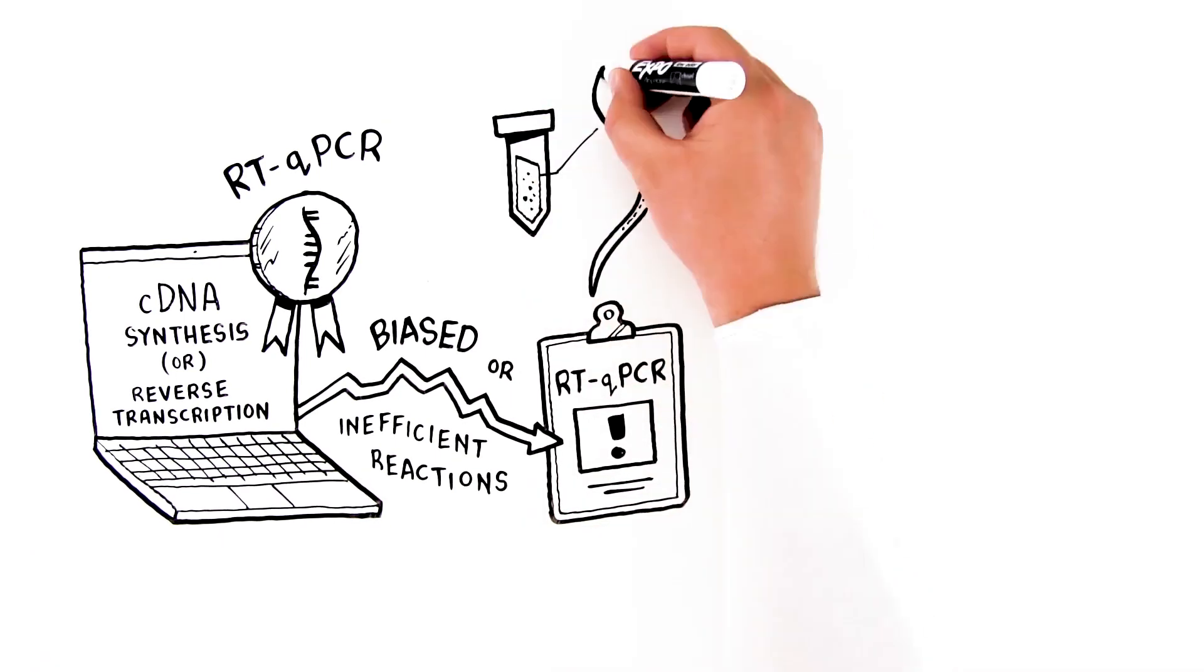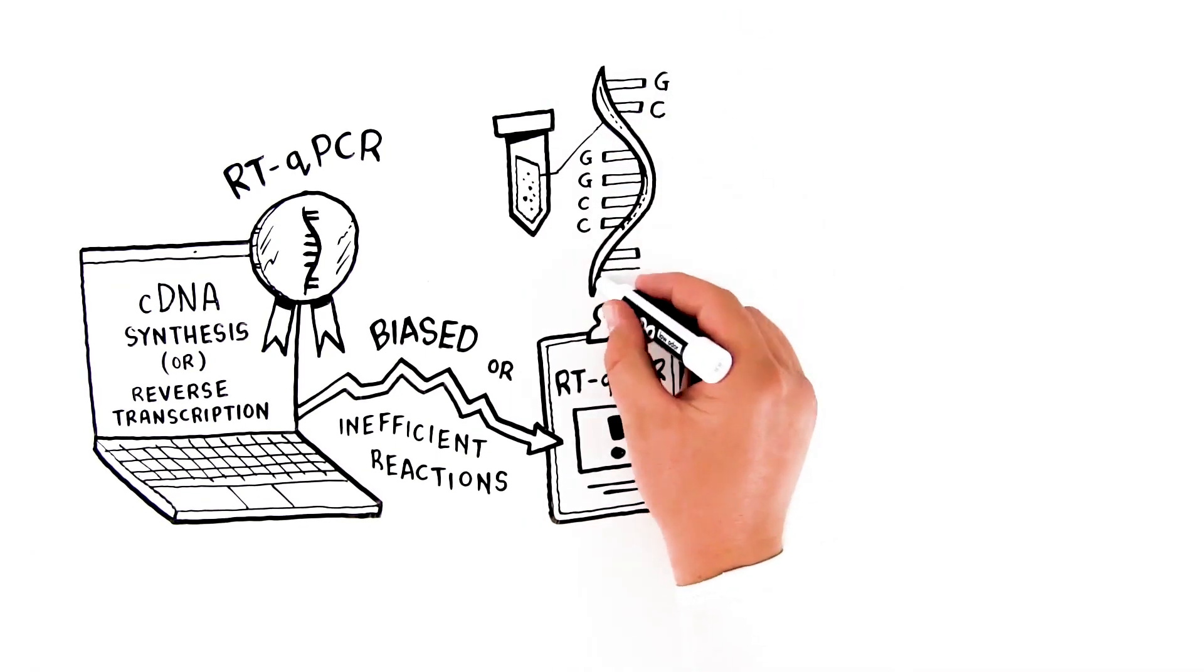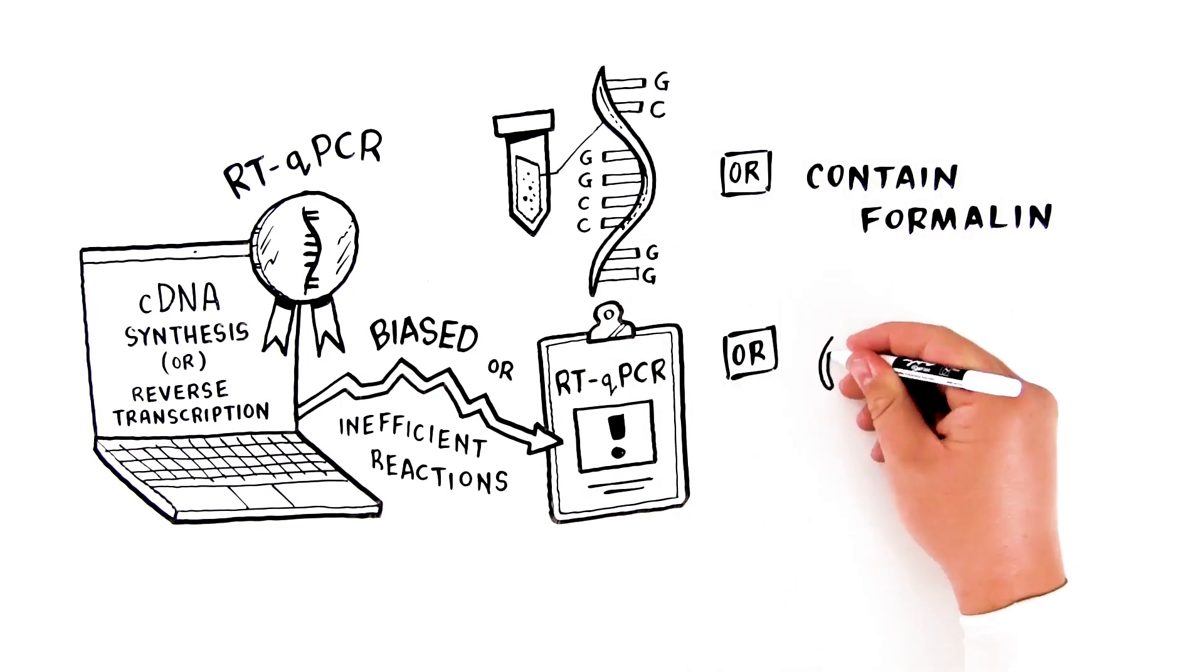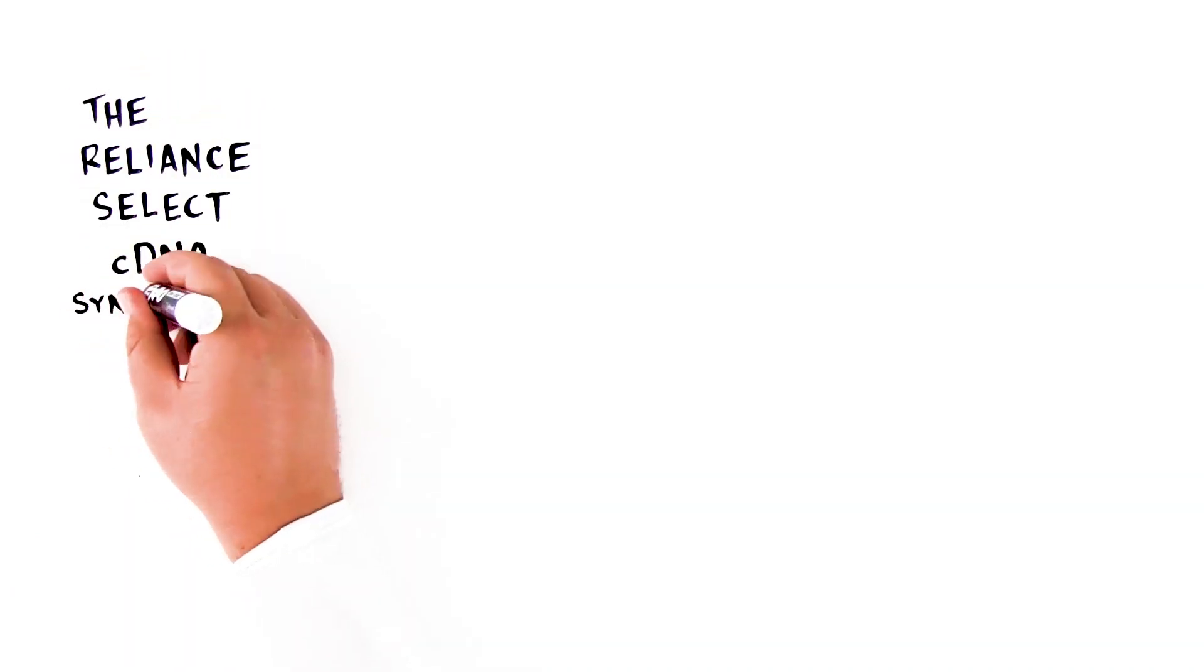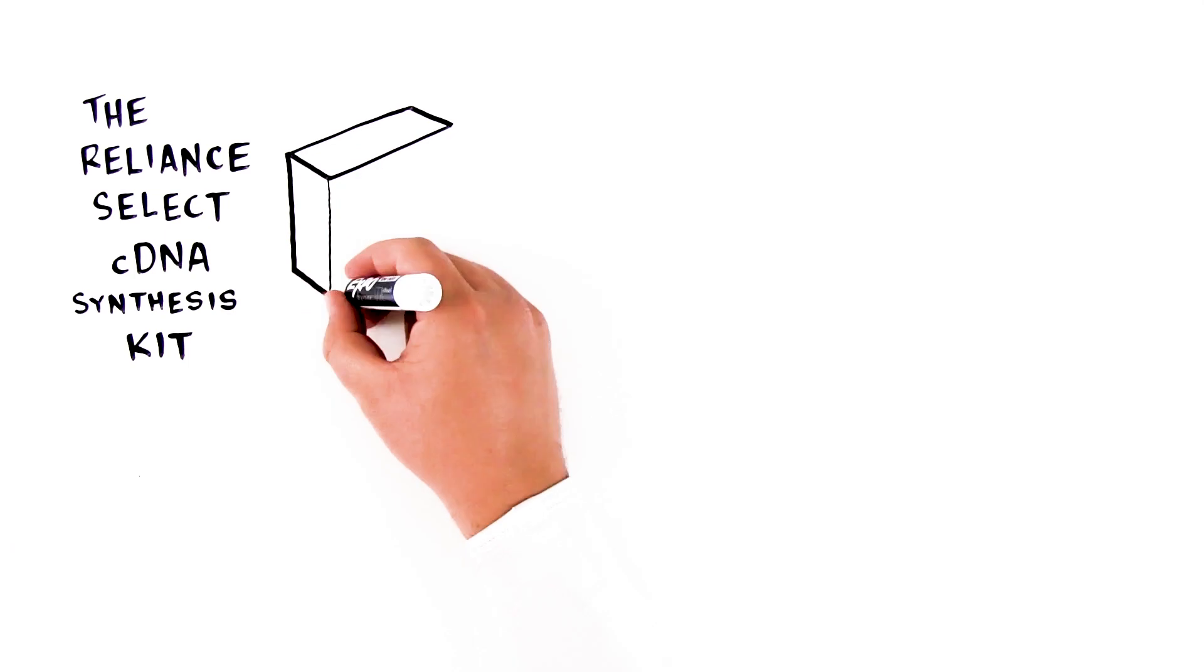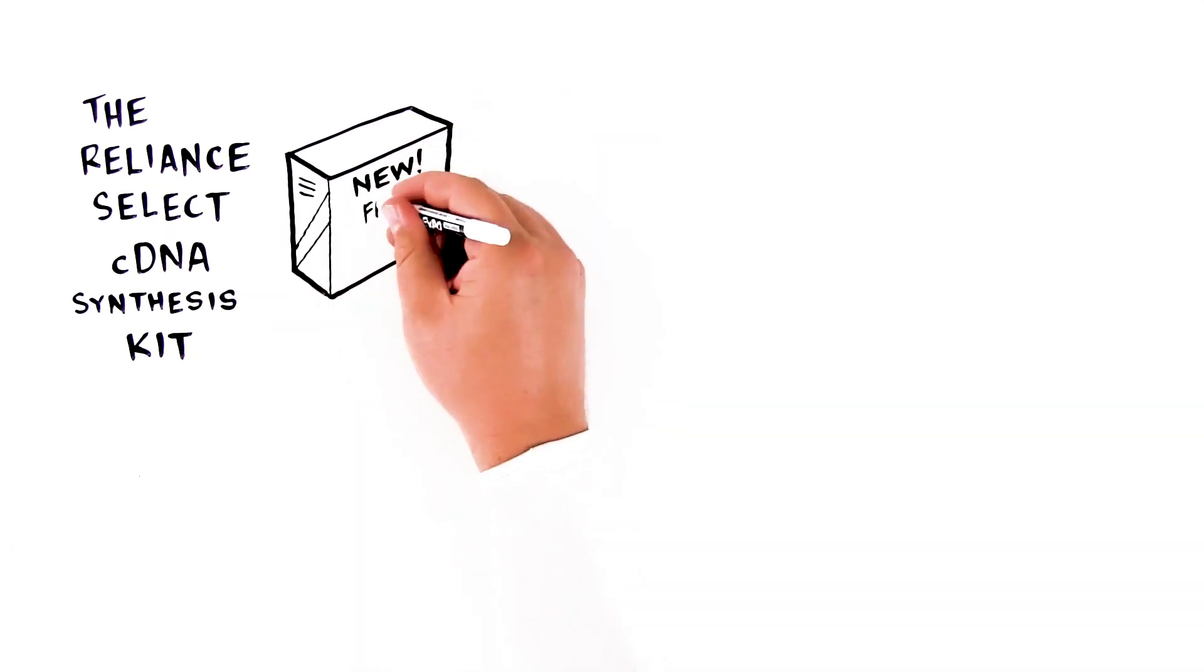Inefficient or biased synthesis is common when the targets of interest are GC-rich or contain secondary structure, or when samples are fragmented or contain inhibitors. The Reliance Select cDNA synthesis kit is a new, premium cDNA synthesis kit from BioRAD.